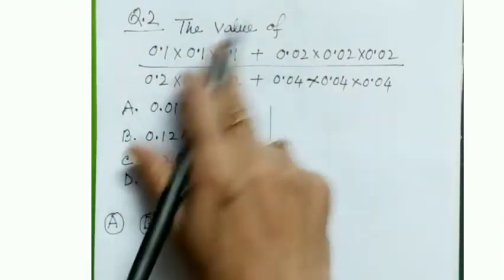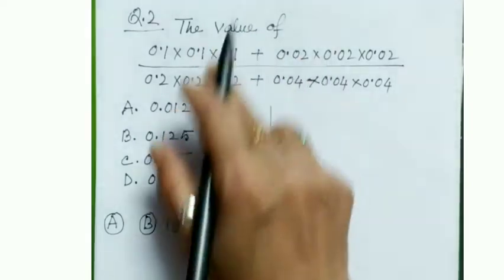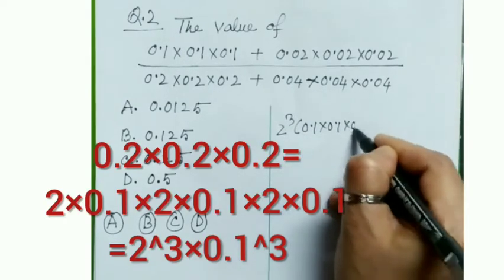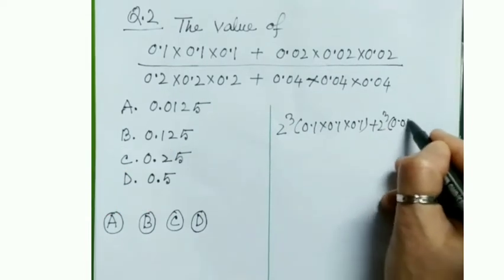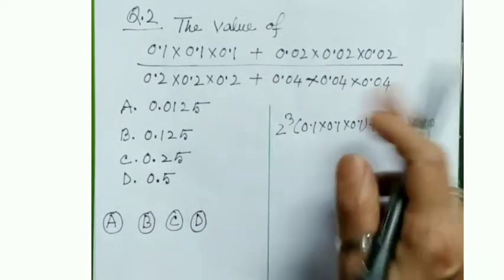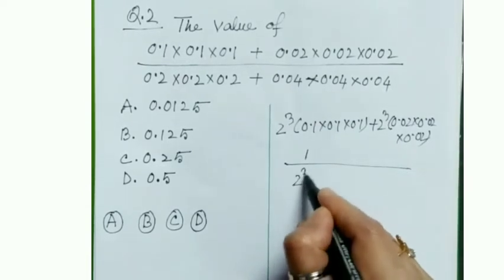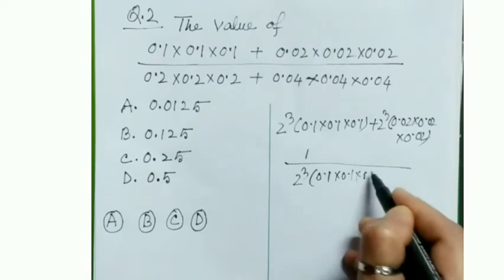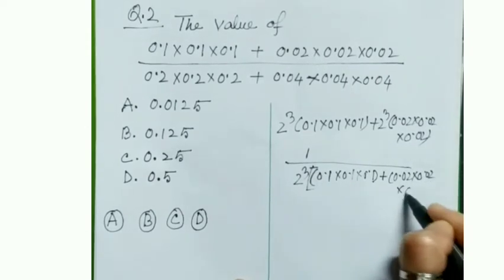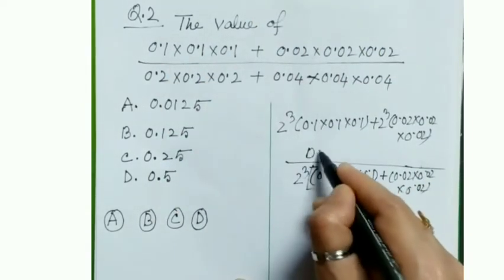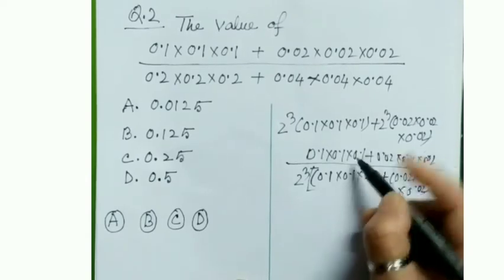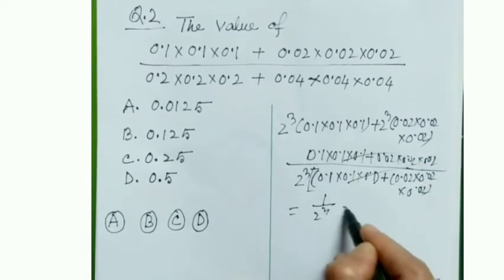Question number two: the value of the given expression is equal to what? Four options are given. The denominator can be written as 2³ × 0.1 × 0.1 × 0.1 plus 2³ × 0.02 × 0.02 × 0.02. We can cancel common factors, leaving 1 divided by 2³ × (0.1³ + 0.02³), and the numerator cancels too, so our answer is 1/2³ = 1/8.